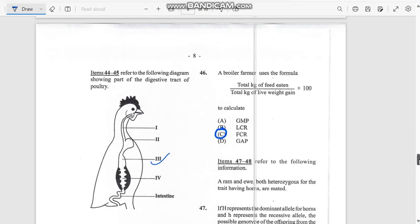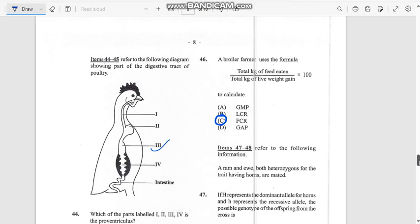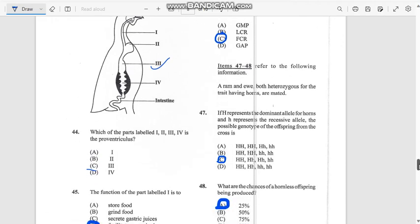Number 46: A broiler farmer uses the formula total kg of feed eaten divided by total kg of live weight gain times 100. If he's going to times the amount of food the broiler eats against the live weight gain, they use the FCR, which means food conversion ratio.